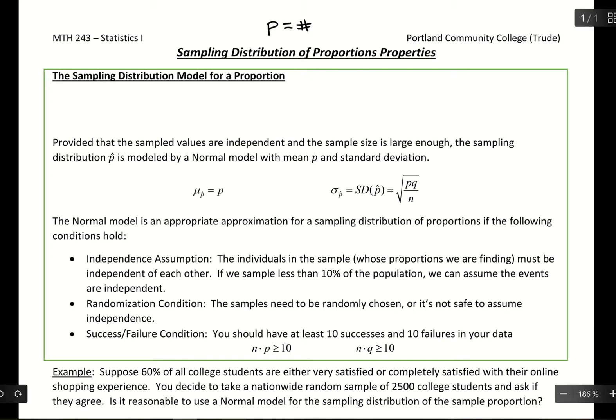So sampling distribution model for a proportion, we're trying to evaluate what happens when we take a sample and what we talked about in the simulation video is that we should be getting this bell-shaped curve out. In order to get that bell-shaped curve out, we have to pass these three conditions.